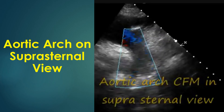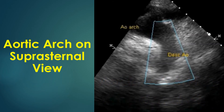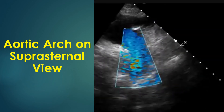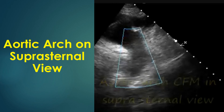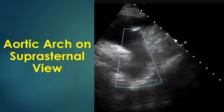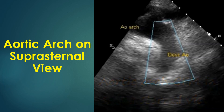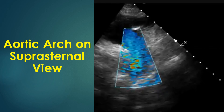The suprasternal view is often the last view obtained during echocardiography. It images the aortic arch and its branches and the proximal descending aorta. This view is used to detect coarctation of the aorta and measure gradients across the coarctation. Ascending aorta can be imaged with a tilt and ascending aortic flow is measured in aortic stenosis to get the gradient across the aortic valve.